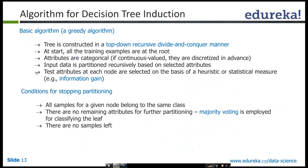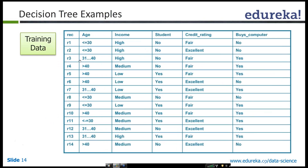According to the high-level algorithm, we start with all 14 records and four attributes: age, income, student, and credit rating. We compute a statistic — a key statistic — for each of these attributes, then choose the attribute that gives the best value of that statistic, and then split on that attribute.